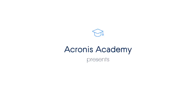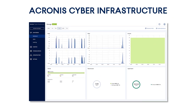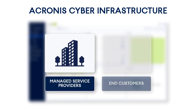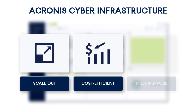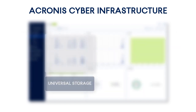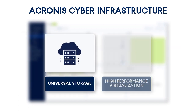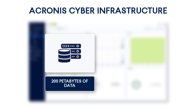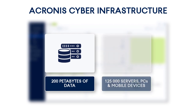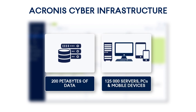Welcome to our exciting new video devoted to the Acronis Cyber Infrastructure. Acronis Cyber Infrastructure represents a new generation of the so-called hyper-converged infrastructure targeted at both managed service providers and end customers. It is a scale-out, cost-efficient, and multi-purpose cyber protection solution that combines universal storage and high-performance virtualization. Deployed at Acronis Data Centers worldwide, Acronis Cyber Infrastructure stores more than 200 petabytes of data backed up from more than 125,000 servers, PCs, and mobile devices.